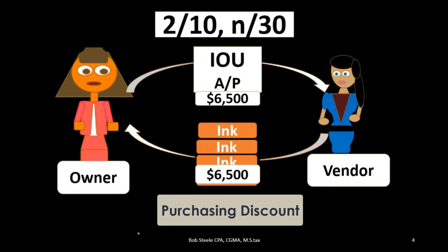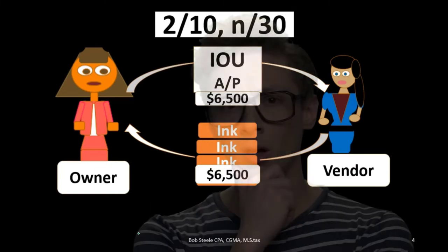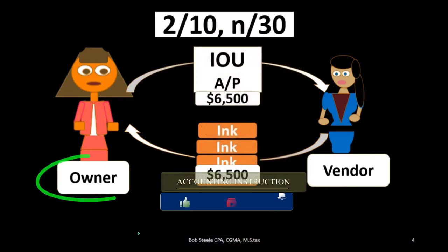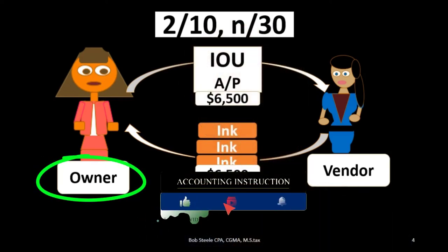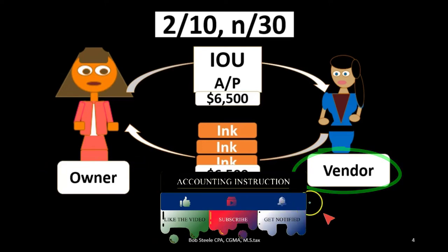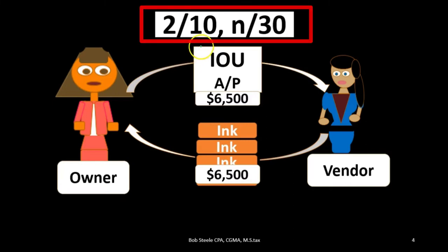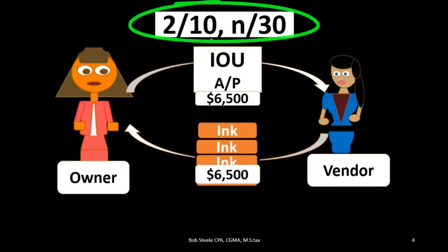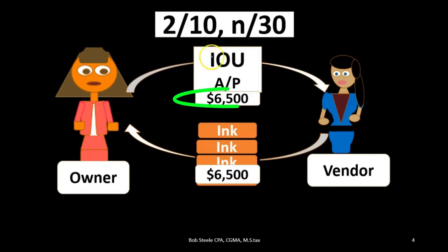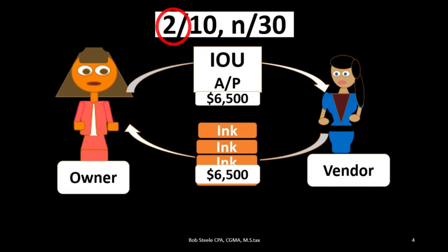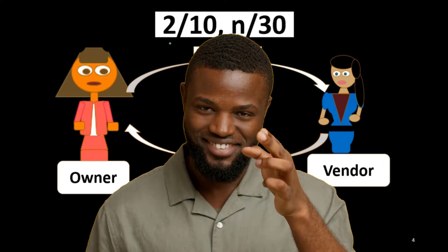Next is the purchase discount, which is often confused with the sales discount. If we are the buyer purchasing merchandise to resell, the vendor may offer terms such as 2/10 net 30 — meaning a 2% discount if paid within 10 days, otherwise the full amount is due within 30 days. If we take that discount, we must decrease the recorded inventory by the discounted amount, since we actually paid less for it.